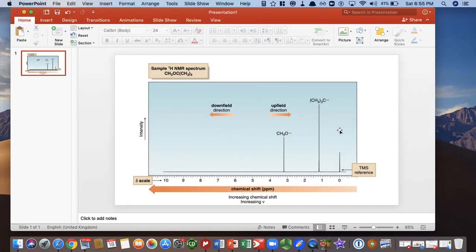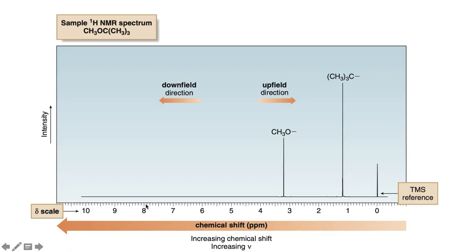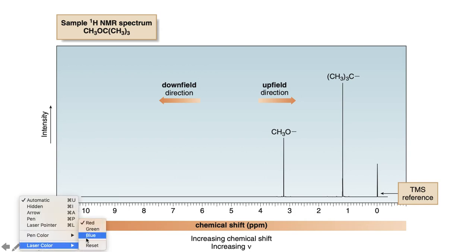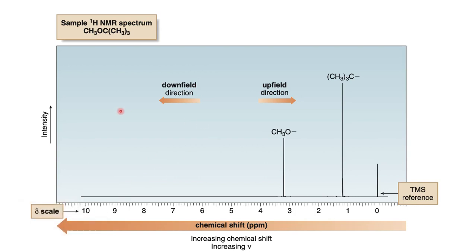I am going to explain the proton NMR of tertiary butyl methyl ether. In the proton NMR, the x-axis is designated as the chemical shift, or you can say parts per million.